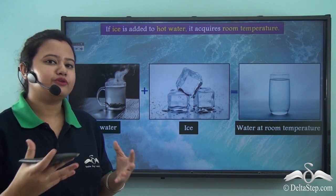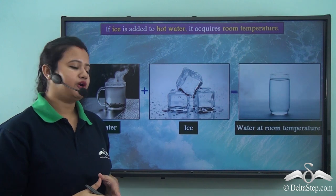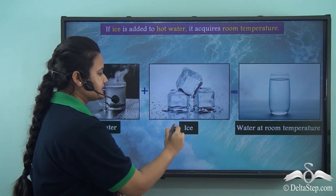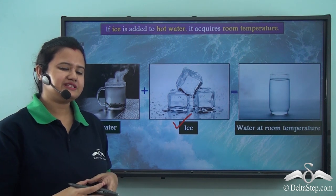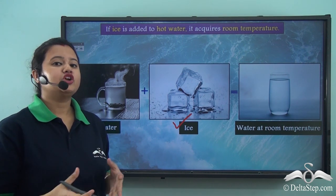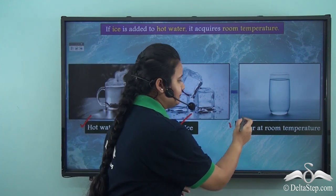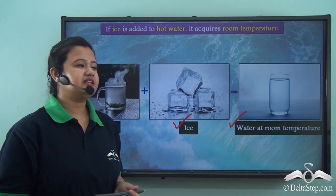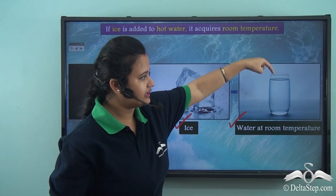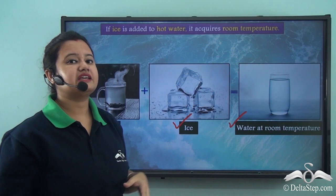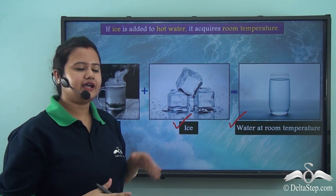Now let us perform an activity. Take a cup of hot water and add some ice cubes to it. After some time, you will observe that the water acquires room temperature. You can check this by dipping your finger into the water — you will find it is neither as hot as boiling water nor as cold as ice.